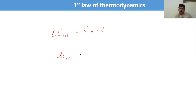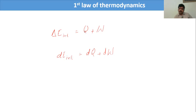Change in internal energy is equal to dQ plus dW. In this case, when heat energy enters the system we get a positive value, and when heat energy exits the system we get a negative value.